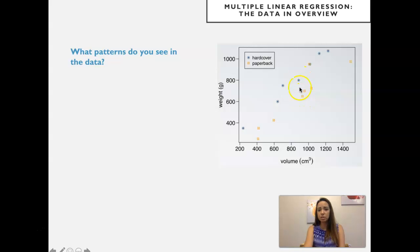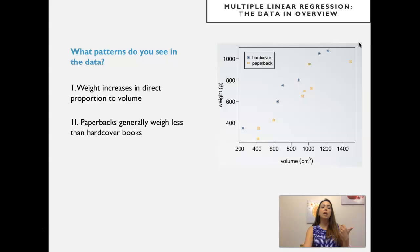Again, these two points here with similar volume, one seems to have higher weight than this one. So that's the general pattern here in the data, and we're kind of separating and coloring the points for different books depending on whether they are hardcover or paperback. But you see the direct relationship here. We see that weight increases in direct proportion to volume, and paperbacks generally weigh less than hardcover for similar volumes.